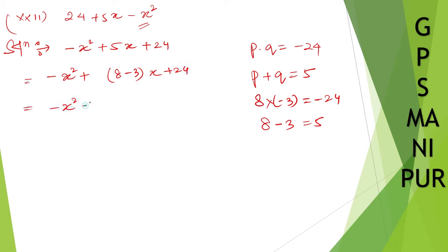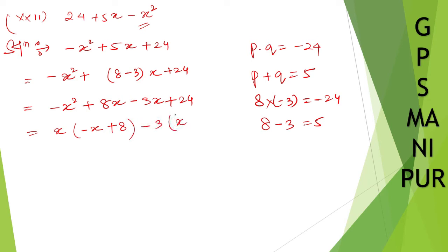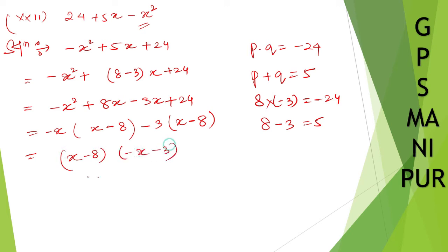So: minus x squared plus 8x minus 3x plus 24. Take x common from the first two: x(minus x plus 8). Take minus 3 common from the last two: minus 3(x minus 8). Wait — take minus x common here, so it becomes minus x(x minus 8). And take minus 3 common: minus 3(x minus 8). Now take (x minus 8) common: (x minus 8)(minus x minus 3). This is your answer.